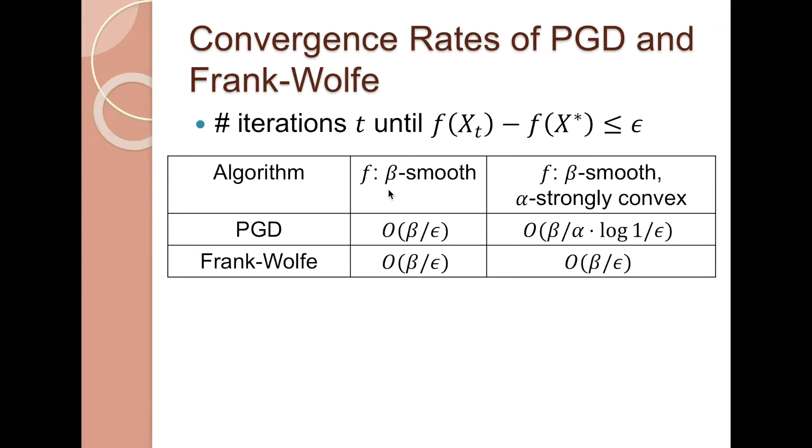When the function f is smooth, projected gradient descent can converge in 1 over epsilon iterations. If f is also strongly convex, the convergence rate can be improved to log 1 over epsilon. This is the so-called linear convergence.